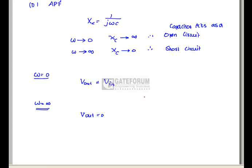Plotting output voltage as a function of frequency: at ω = 0, output equals v_in; at ω→∞, output is 0. As frequency increases, the output decreases. This is the characteristic of a low-pass filter, so option A is correct.